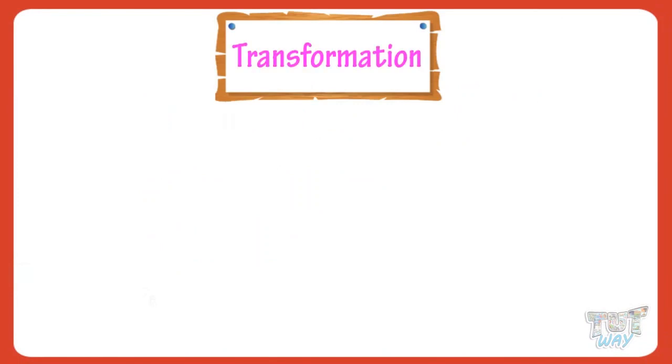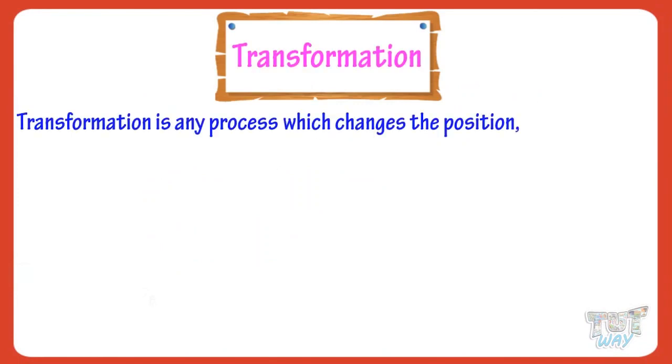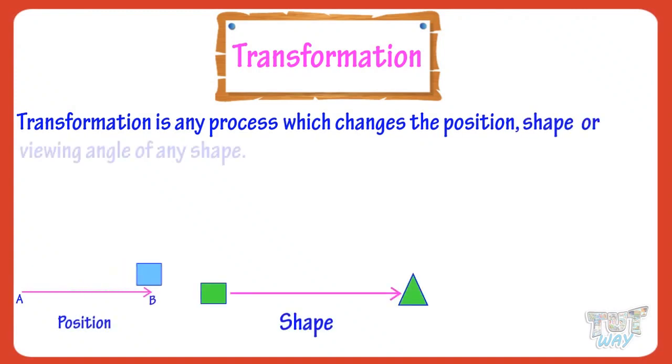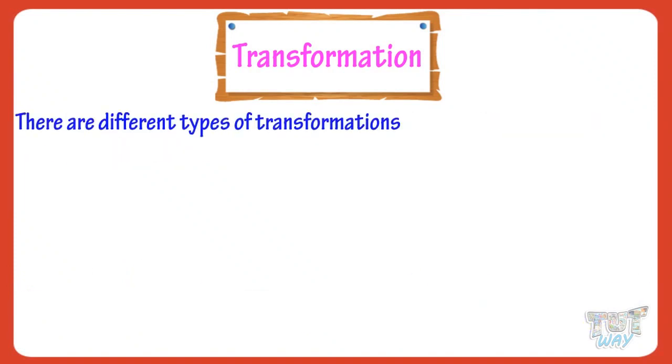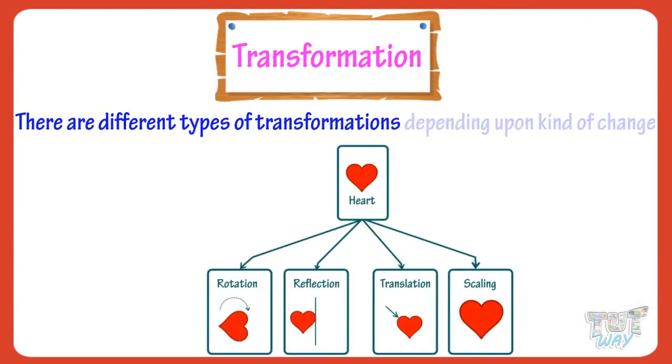First of all, we will learn what is transformation. Transformation is any process which changes the position, shape, or viewing angle of any shape. There are different types of transformation depending upon the kind of change it's doing to the 2D shape. Let's learn more on it with the help of examples.